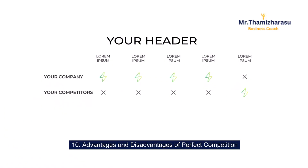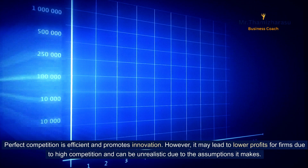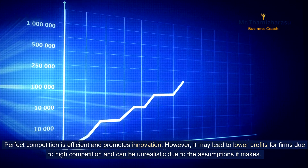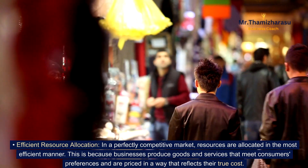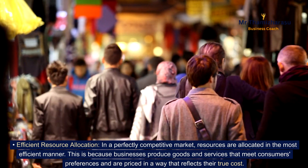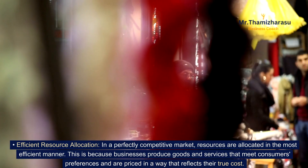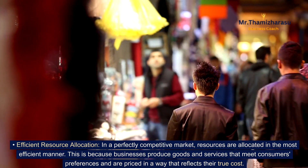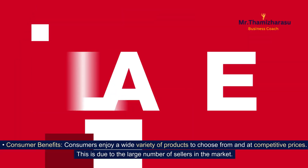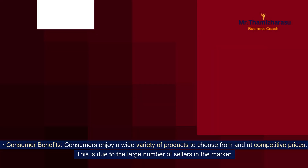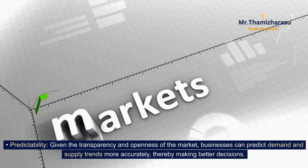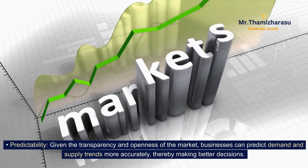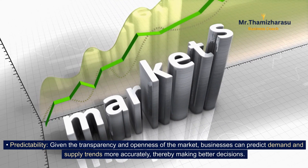10. Advantages and disadvantages of perfect competition. Perfect competition is efficient and promotes innovation. However, it may lead to lower profits for firms due to high competition and can be unrealistic due to the assumptions it makes. This is because businesses produce goods and services that meet consumers' preferences and are priced in a way that reflects their true cost. Consumers enjoy a wide variety of products to choose from at competitive prices, due to the large number of sellers in the market. Given the transparency and openness of the market, businesses can predict demand and supply trends more accurately, thereby making better decisions.